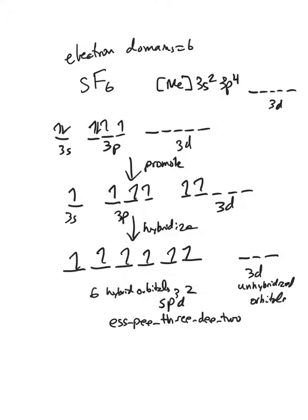sp3d2. And those superscripts are telling us how many of those particular orbitals we're using. We're using a single s, a trio of p's, and a duo of d's.